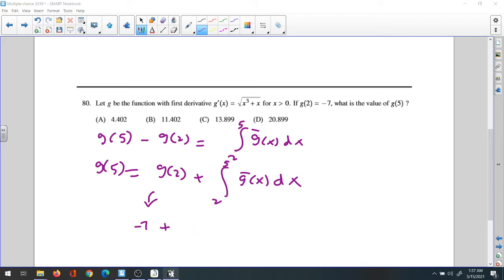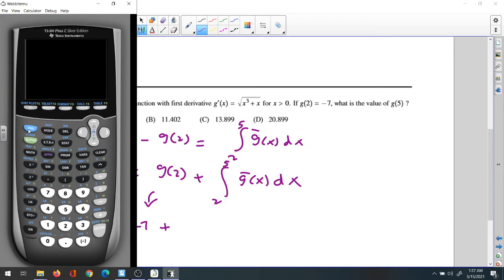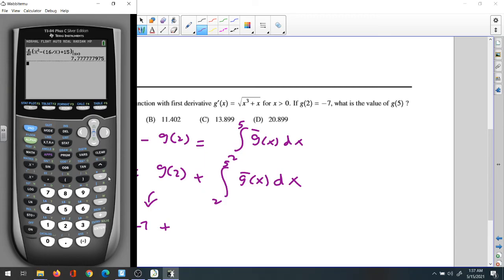We're going to get our calculator here. If you want to find the integration, press math and scroll down to 9 or press 9. It gives us the integration from 2 to 5.